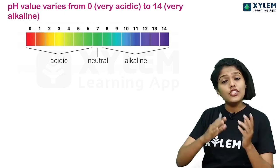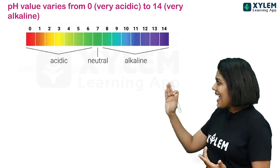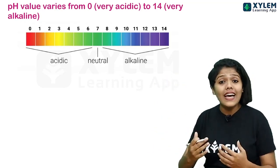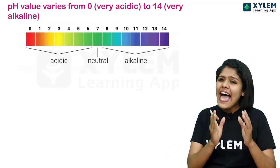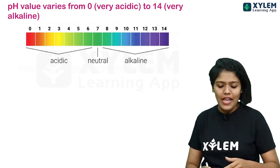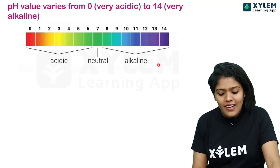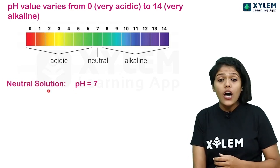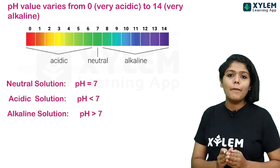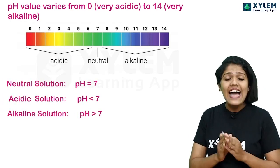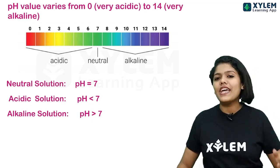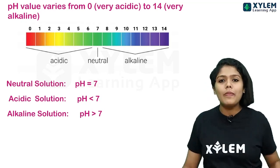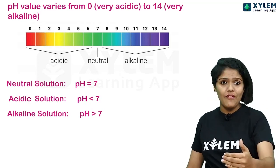Moving from 7 toward 14 — 8, 9, 10, 11, 12, 13, 14 — we have alkaline nature, which increases up to value 14. In summary: a neutral solution has pH equal to 7; an acidic solution has pH less than 7; and a basic or alkaline solution has pH greater than 7.